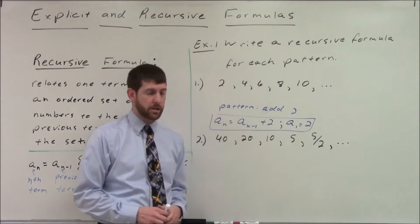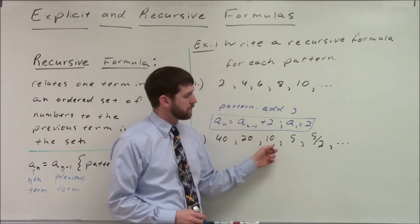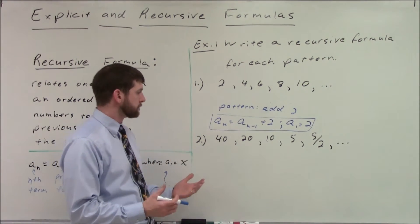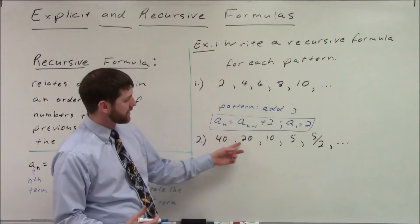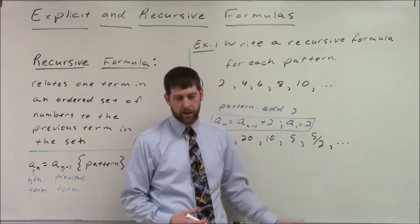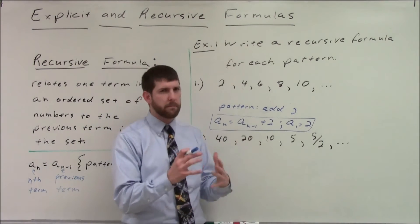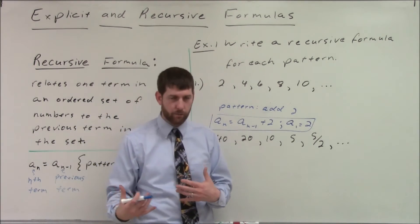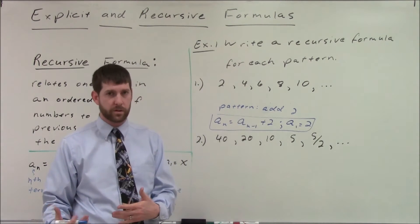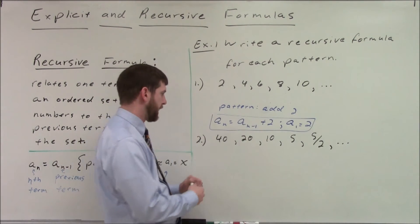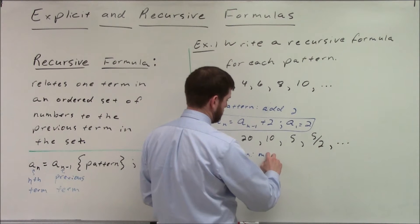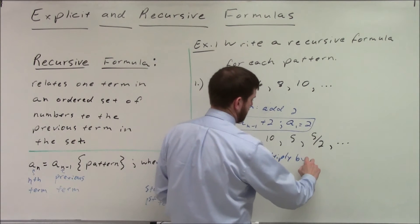Let's check and see how you did. First, we need to describe the pattern. This sequence goes 40, 20, 10, 5 — we're not adding or subtracting the same number every time, so it's probably going to be a multiplication problem. You can see we're dividing the numbers by 2 each time: 40 divided by 2 is 20, divided by 2 is 10, divided by 2 is 5, divided by 2 is 5 halves. But in math, we don't like to think in terms of dividing — we want to think in terms of multiplying by the reciprocal. So we're multiplying by 1 half.